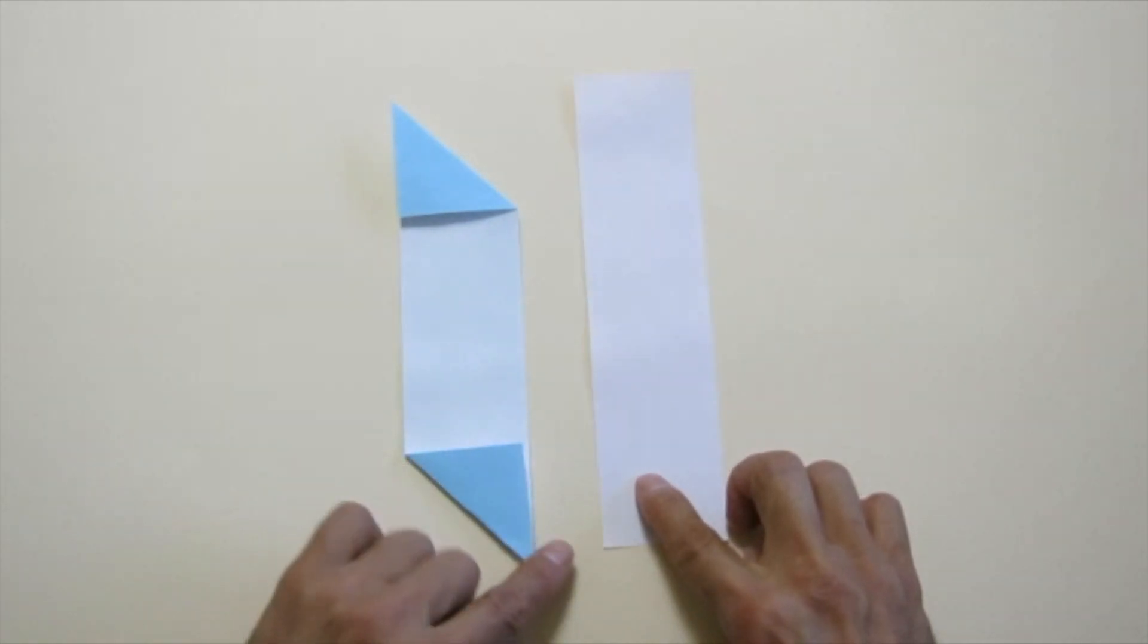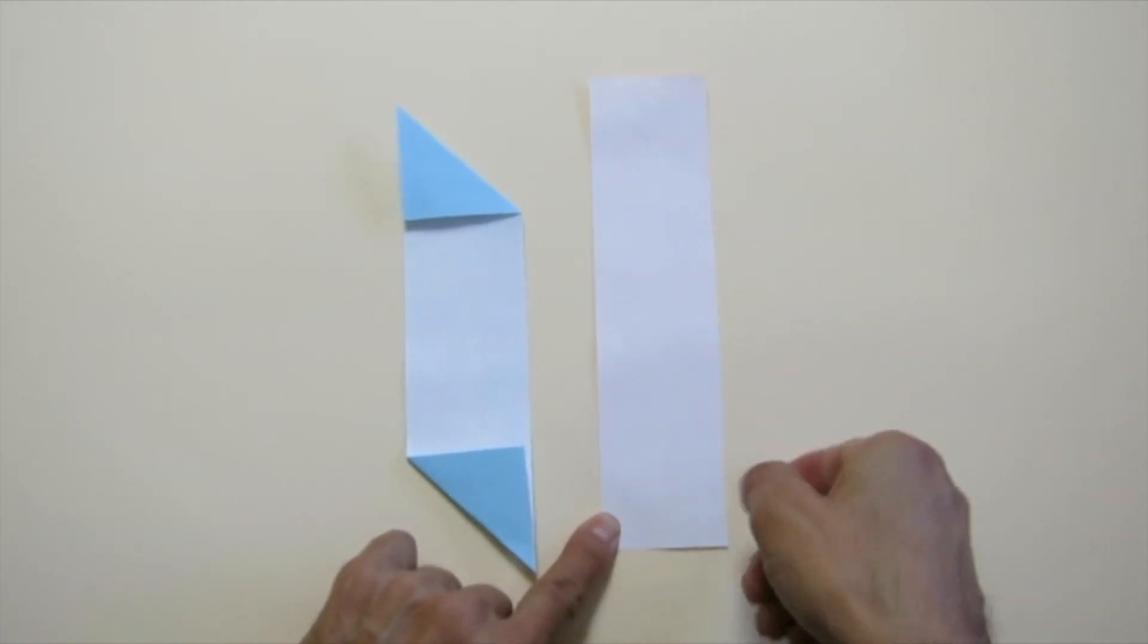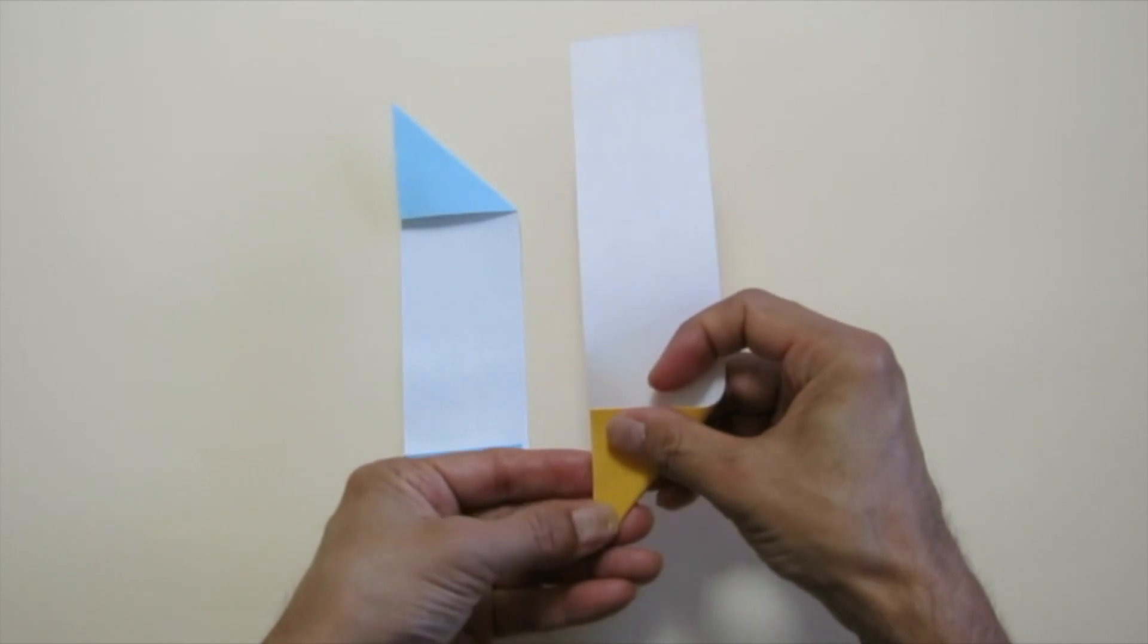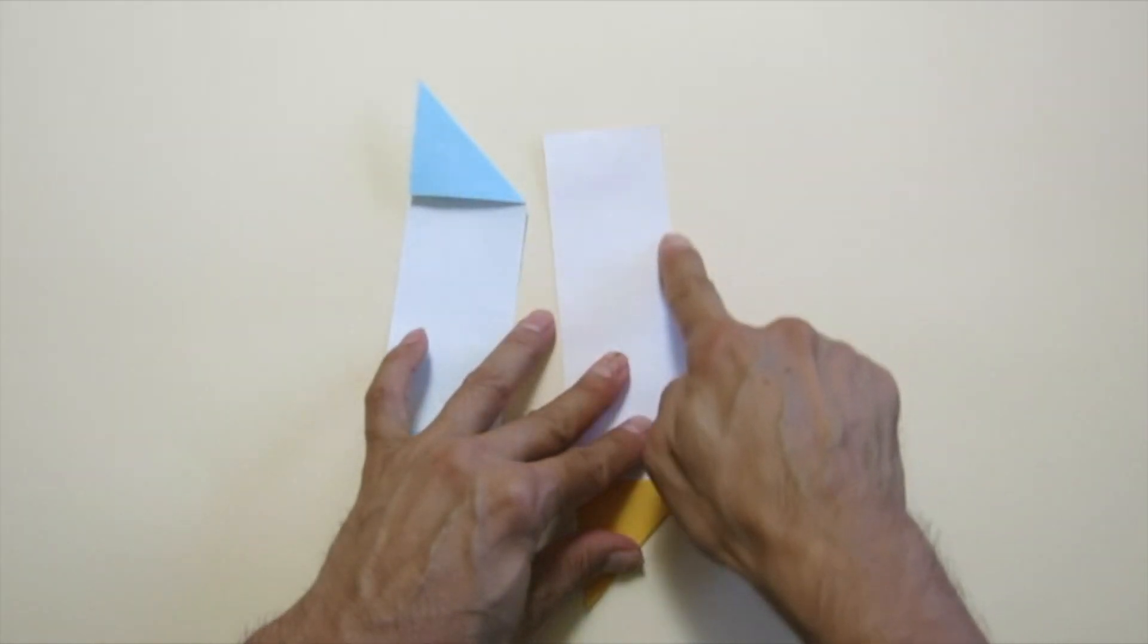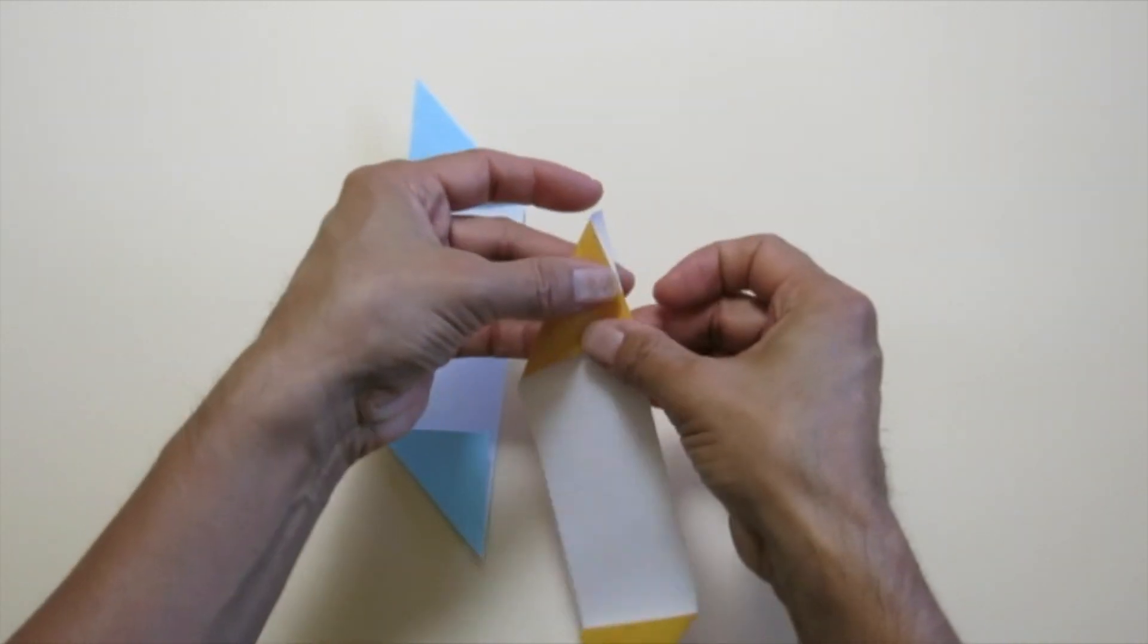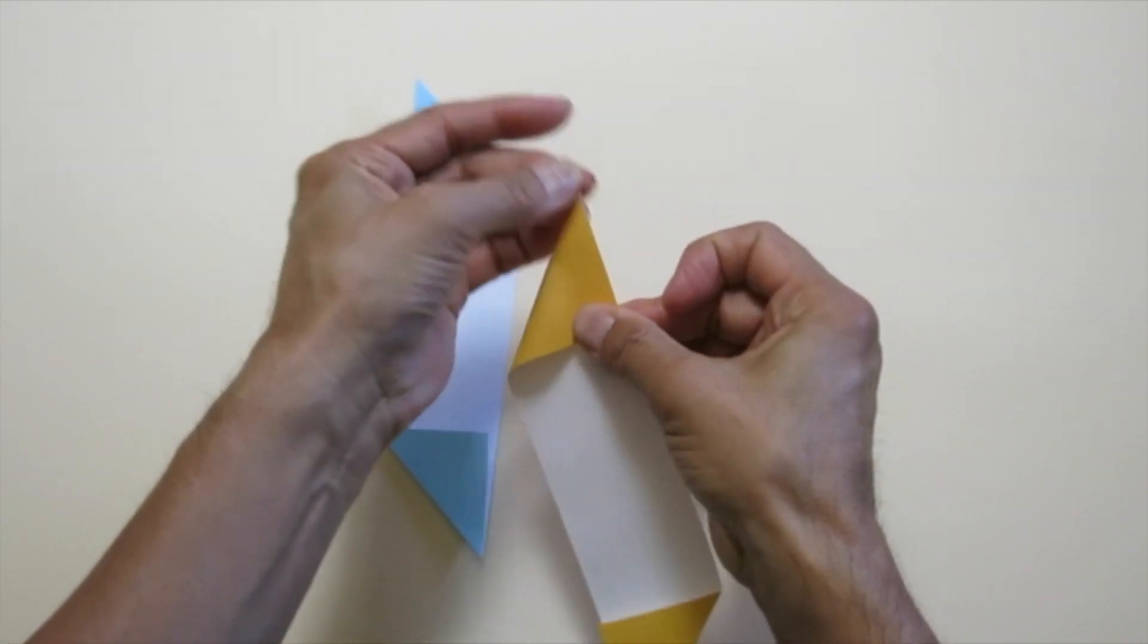Move to the right strip. Bring the bottom to the left edge. Make a valley fold. Bring the top to the right edge. Make a valley fold. These two strips are mirror images.